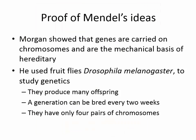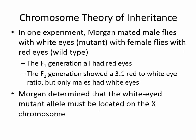Where is the proof of Mendel's ideas? Morgan showed that genes are carried on chromosomes and are the mechanical basis of heredity. He used fruit flies — Drosophila melanogaster — to study genetics, not peas. He chose fruit flies because they produce many offspring, a new generation can be bred every two weeks, and they have only four pairs of chromosomes. In one experiment, Morgan mated male flies with white eyes (a mutant) with female flies with red eyes (wild type). The F1 generation all had red eyes. The F2 generation showed a three-to-one ratio of red to white eye, but only the males had white eyes — he determined that the white-eyed mutant allele must be located on the X chromosome.